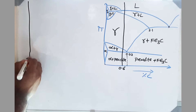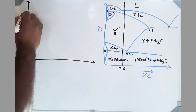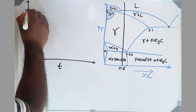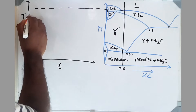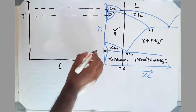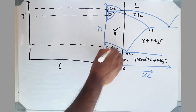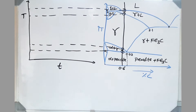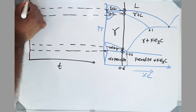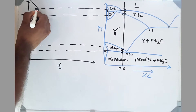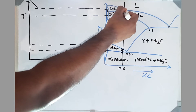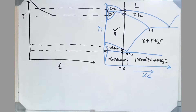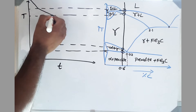The cooling curve is plotted between temperature and time. First let's look at all the transformation temperatures — there is one temperature, then another temperature, and the last is a lower temperature. So initially the liquid is at a higher temperature; it cools normally until the first transformation temperature. At that temperature, liquid is giving gamma plus liquid, so it's a two-phase region and the slope changes because some latent heat is being released.